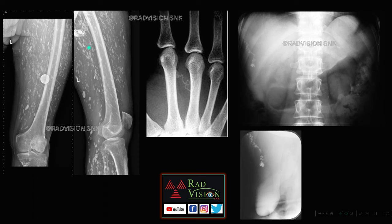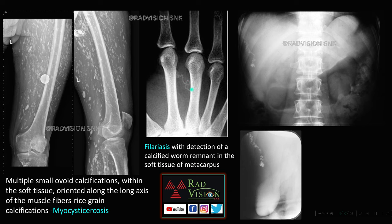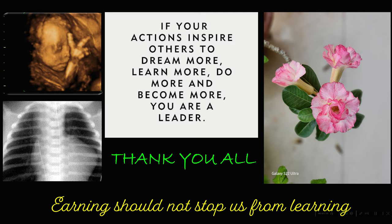Multiple calcifications along muscle fibers are called rice grain or rice body calcifications, seen in myocysticercosis. Filariasis is detected as calcifications in the soft tissues of the metacarpus. Multiple ovoid calcifications in subcutaneous tissues are guinea worm calcifications. Thank you all.